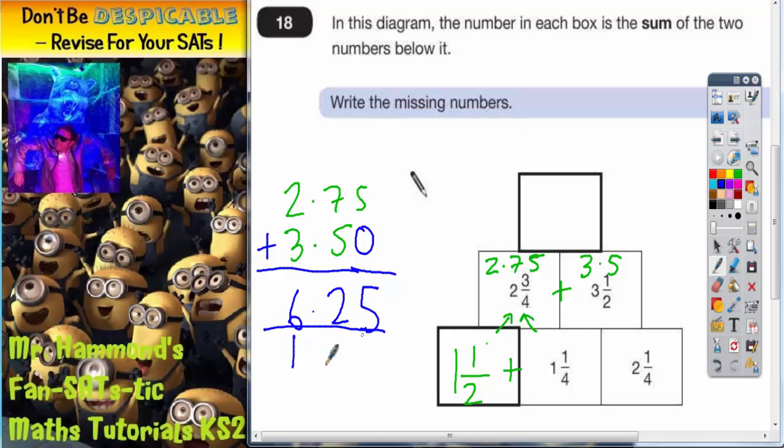Now remember, 6.25 is the same as 6 whole ones, and 0.25 is a quarter. So there are two possible things we could write in here. We could write 6 and a quarter if we're keeping it in the same format as before, and it's a fraction. That's a mixed number because it's got a whole number apart plus a fraction, 6 and a quarter.